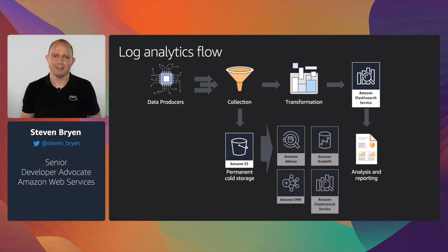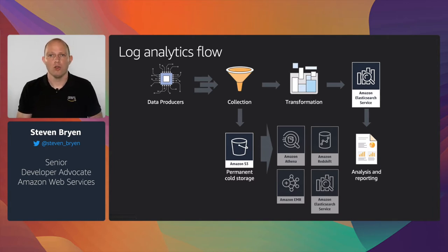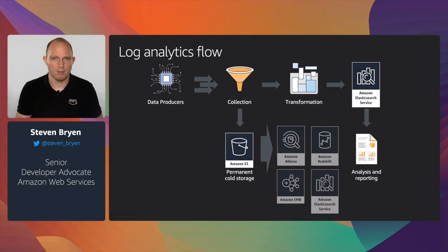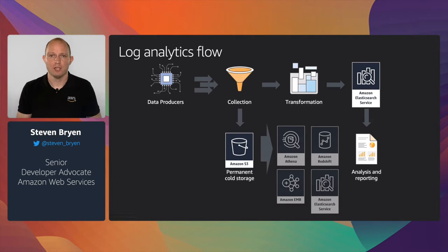Customers typically take logs from data producers — application, system, or AWS logs — collect and store them in permanent storage like S3, then transform and analyze them using services like Amazon Athena or EMR for ETL processing, and dump them into Elasticsearch for visualization with Kibana. This is typical log aggregation architecture. I want to spend the rest of the session talking about AWS services that simplify this using machine learning to help identify security findings sooner.